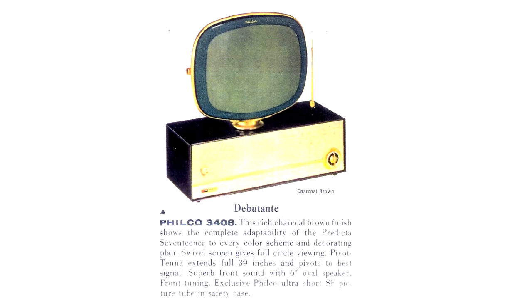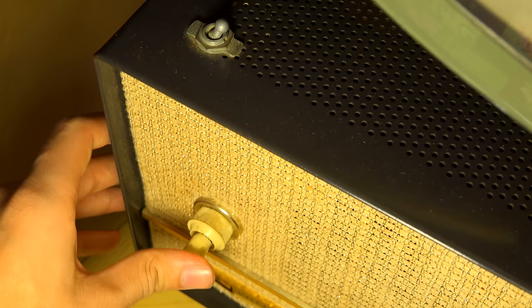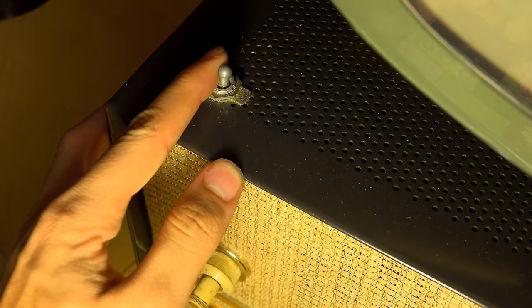This TV was built in 1959 and was known as the debutante model of the Predicta line, aka the Danish Modern model. The first thing I noticed was a faulty power switch on the front. These used to fail, and a common result was just installing an aftermarket switch on the top.